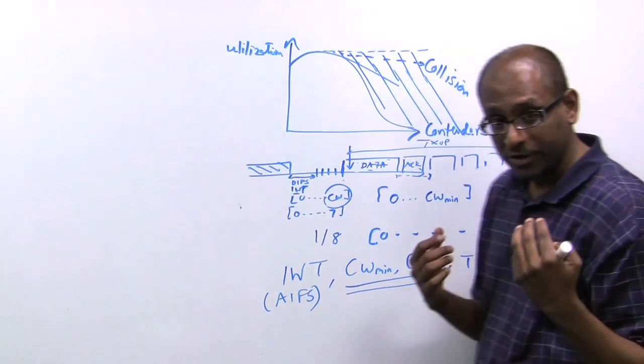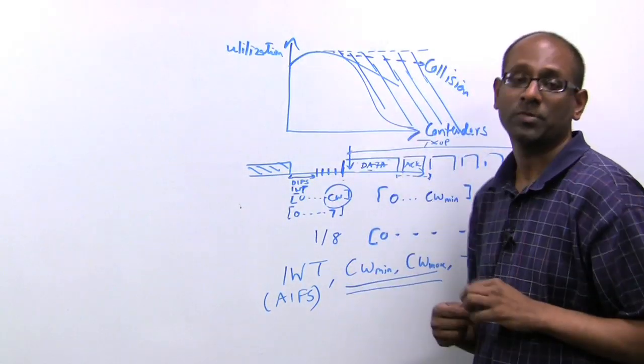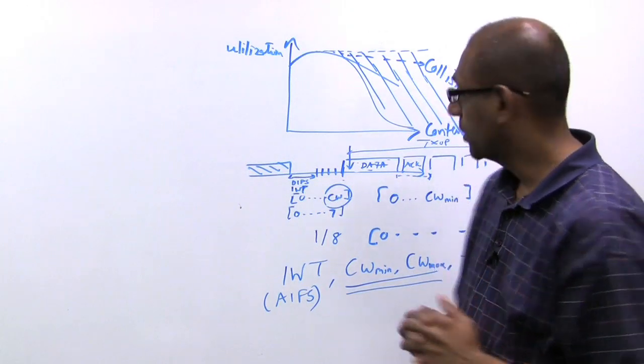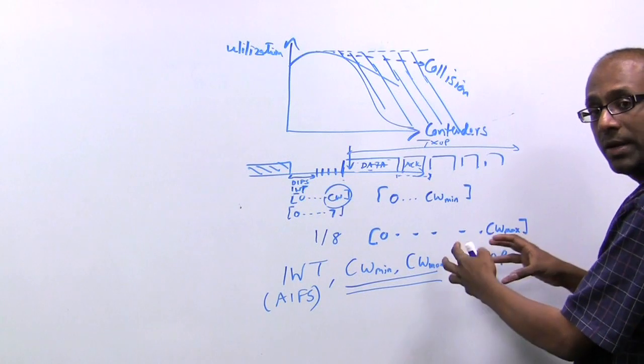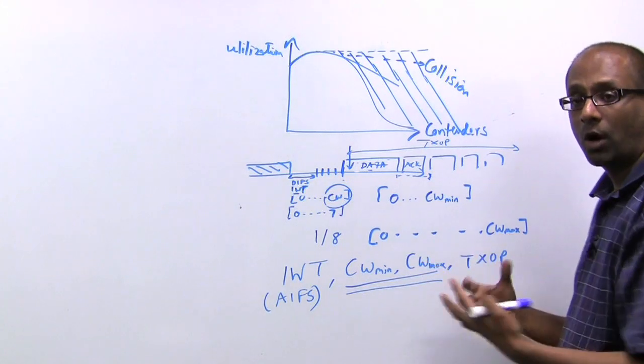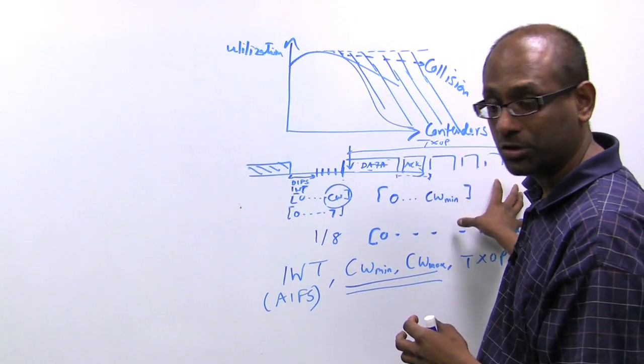And this is something that's a dramatic differentiator for us, because pretty much everybody else in the industry sort of tops off at some point. So this is one very significant aspect where we are using contention window adaptation, what we call adaptation of the WMM parameters, in order to minimize collisions. Step one.